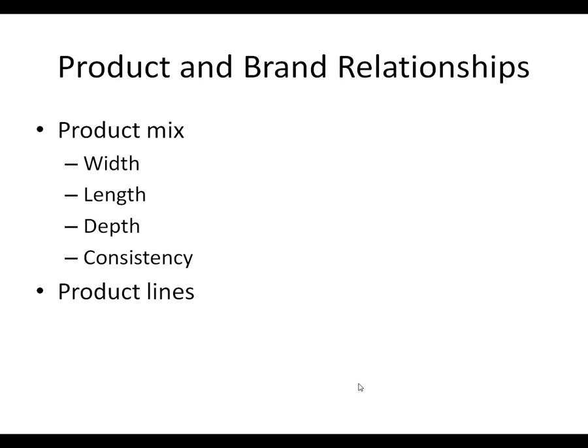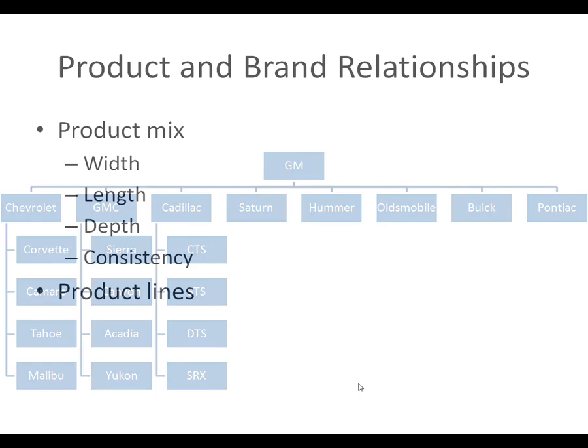Switching gears — we've been talking about individual products, but most companies have multiple products. How do we organize and set our marketing strategy when we have all these different types of products? We have some terms: product mix. Within your product mix you have width, length, and depth. We also have product consistency — basically how similar are all your products to one another — and product lines.